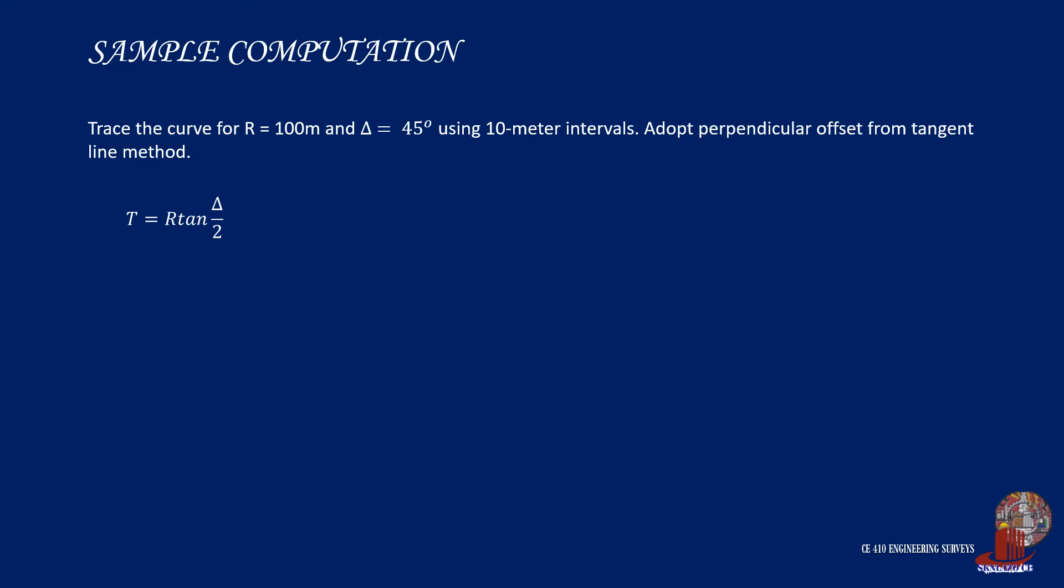The formula for t is r times tangent of delta all over 2. By plugging the given values, we have 100 times tangent of 45 all over 2, which would then be computed as 41.4213 meters.